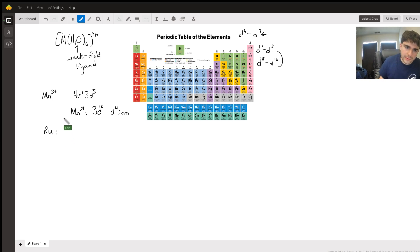So 44. All right, that means that it's going to be 5s2, 4d6. Remove 3 electrons, and you get a D5 ion.